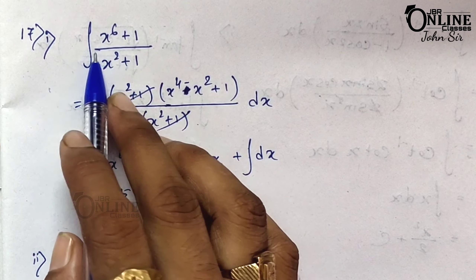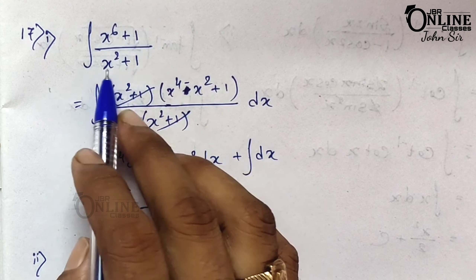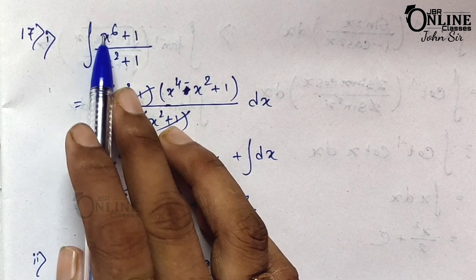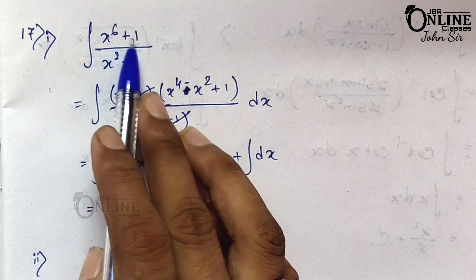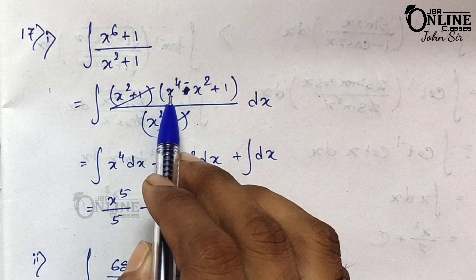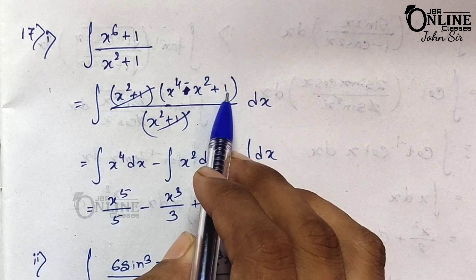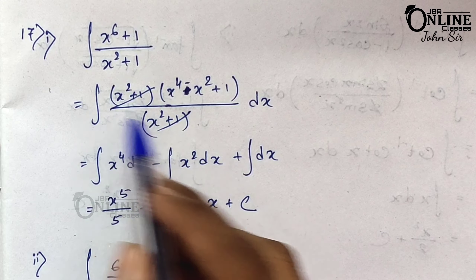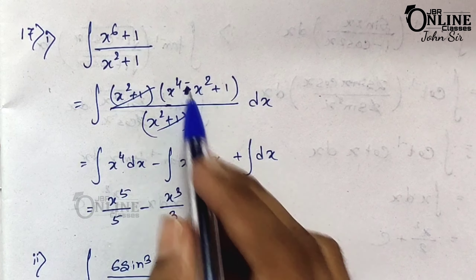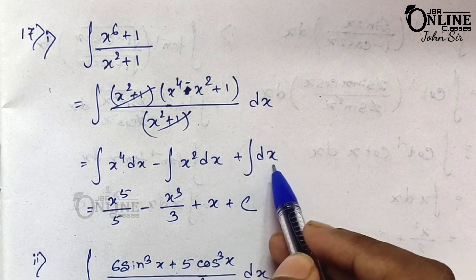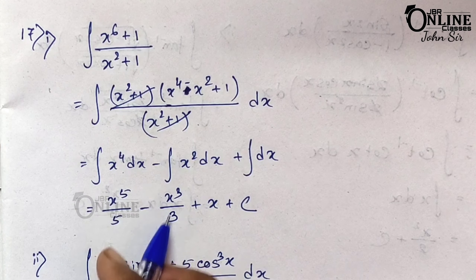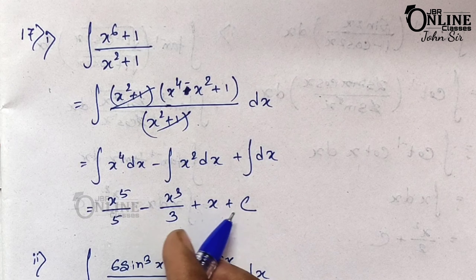Sum 17.1: integration of (x⁶ + 1)/(x² + 1). Since x⁶ + 1 = (x²)³ + 1³, use the A³ + B³ = (A + B)(A² − AB + B²) formula. So (x² + 1) cancels, leaving x⁴ − x² + 1. Integrating term by term: x⁵/5 − x³/3 + x + c.